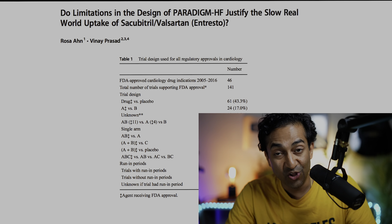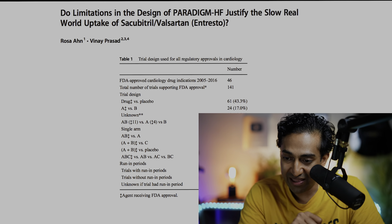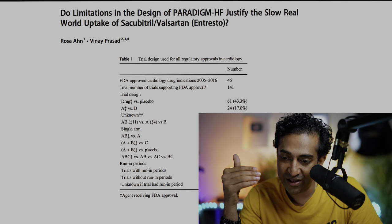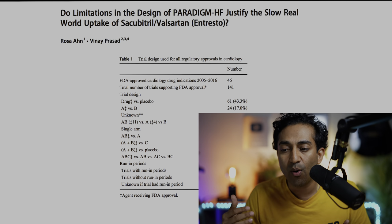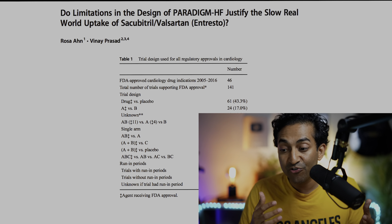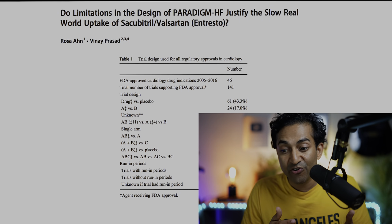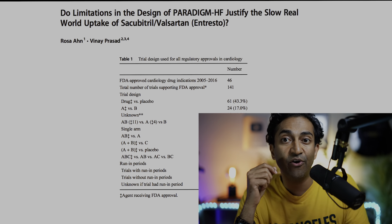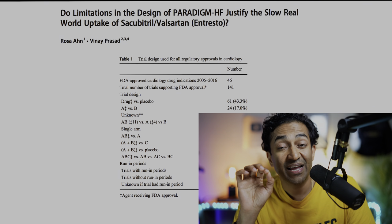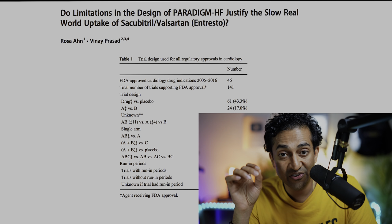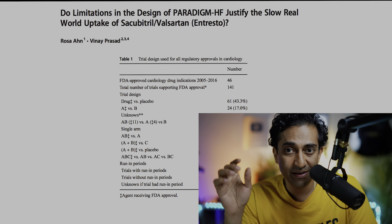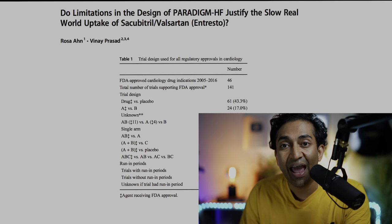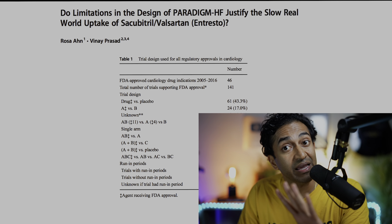Looking globally at randomized controlled trials in cardiology: from 46 consecutive drug approvals and 141 studies, drug versus placebo happens 43% of the time, drug A versus B 17% of the time, drug AB versus A versus B 10% of the time. Very rarely do we have double drug run-in periods of unequal length — the Entresto PARADIGM-HF trial is the only example. BIDIL — isosorbide/hydralazine — actually required a confirmatory study from the FDA, so it arguably has better evidence than PARADIGM-HF.